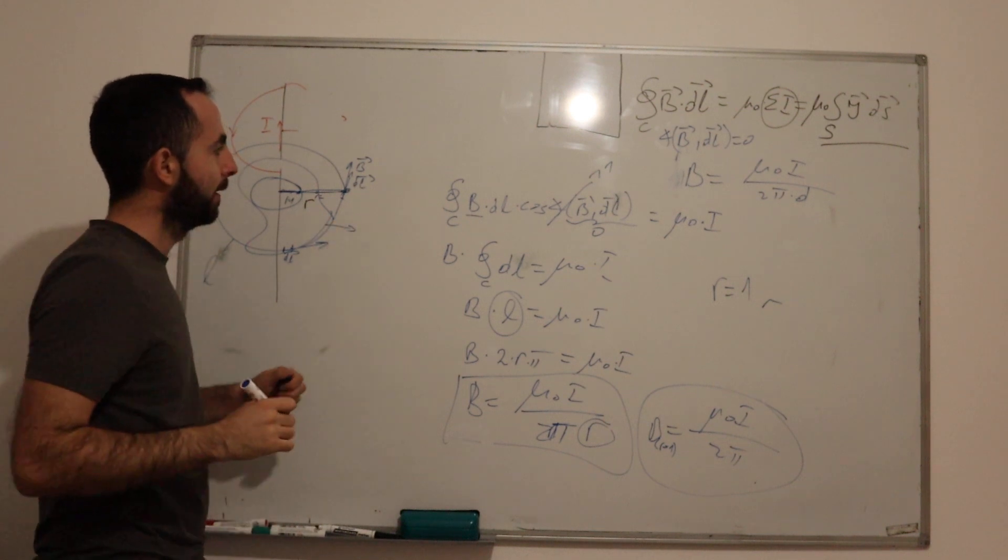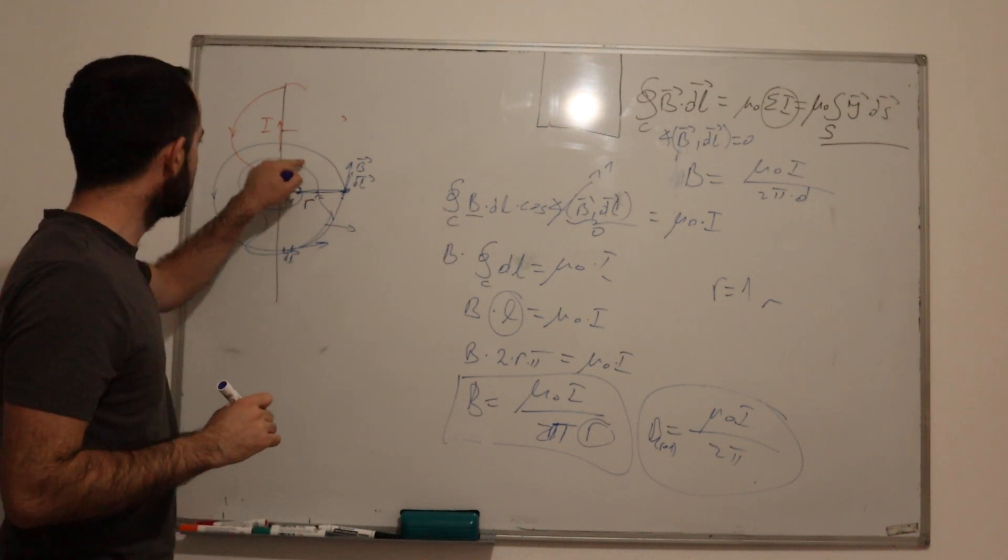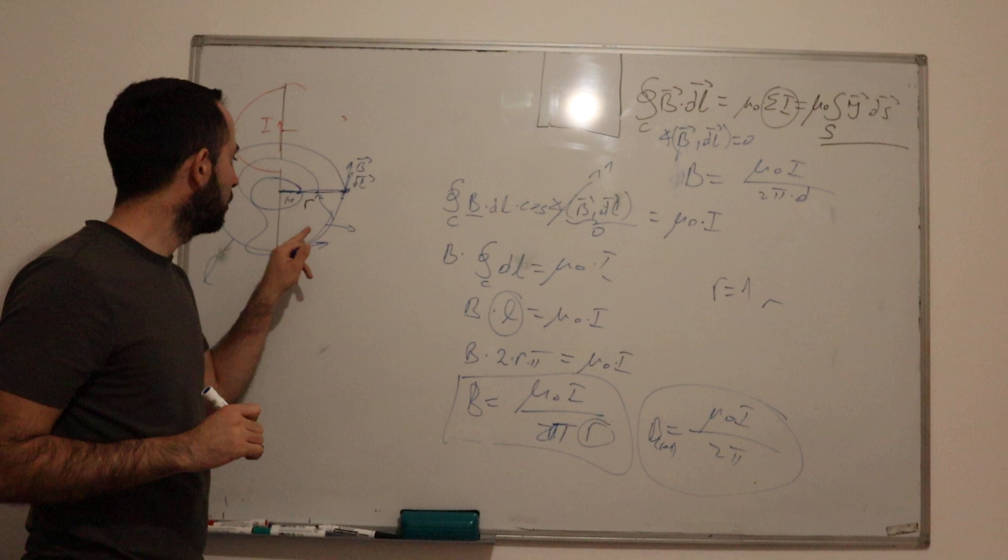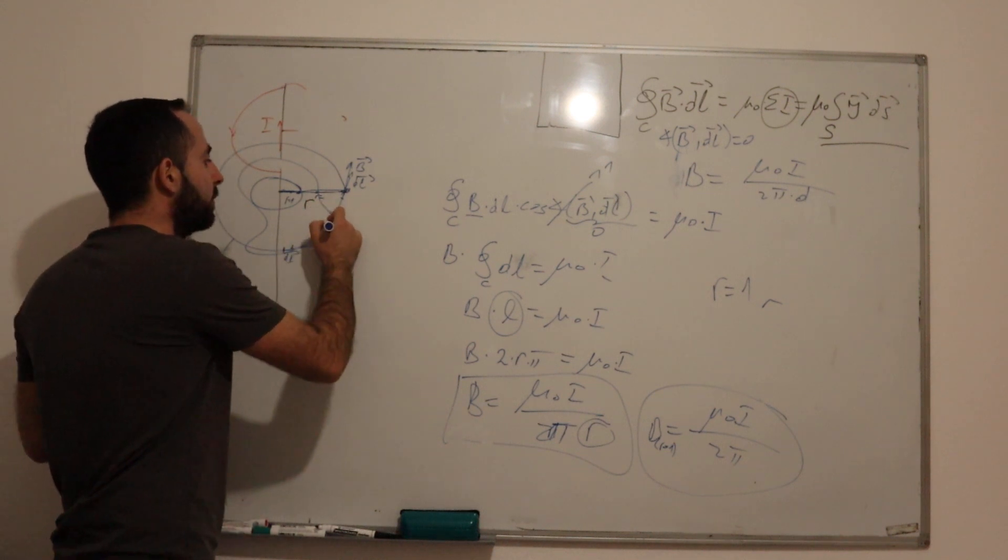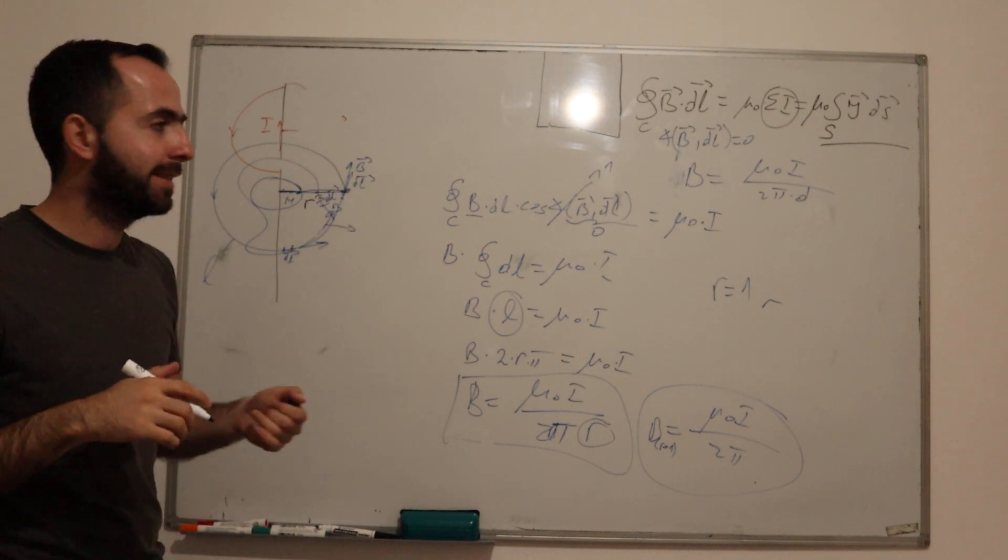You will get that B is not constant over all of this contour, that the angle between B and, for example, here dL changes, etc.